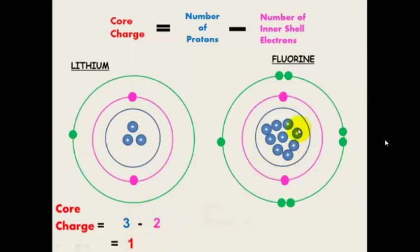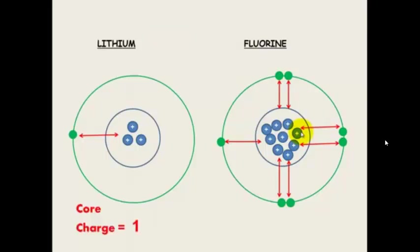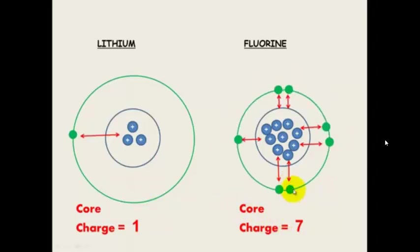For fluorine, its core charge equals 9 protons minus 2 inner shell electrons, giving an answer of 7. So the higher the core charge, the more attraction the electrons on the outside shell have to the nucleus, and thus the atomic radius gets smaller. Lithium has a core charge of 1 and fluorine has a core charge of 7, which makes more attraction to the outer electrons and a smaller radius.